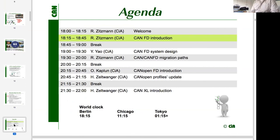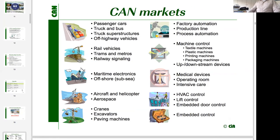Now let's dig into the topic of CANFD. Some of you may be new to CANFD, so we thought it wise to start with a short wrap-up. CAN — the controller area network — was developed in the early 1980s, mainly for use in the car industry. In 1986 it was presented to the public, and in 1987–1988 the first CAN controller implementations appeared. In 1990, the first CAN bus was implemented in a passenger car — the Mercedes S-Class.